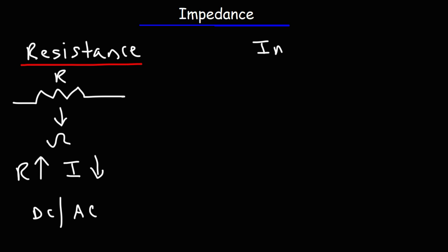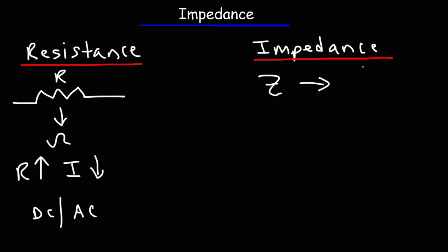Now, impedance is very similar to resistance. Impedance is represented by the letter Z, and like resistance, the unit is ohms. But impedance represents the opposition to the flow of electrical current in AC circuits, as opposed to DC circuits.